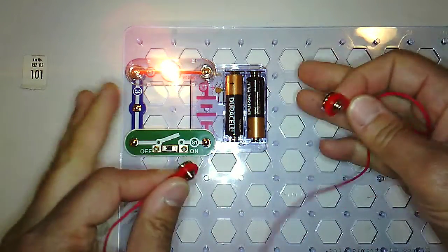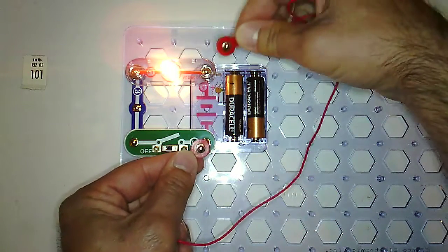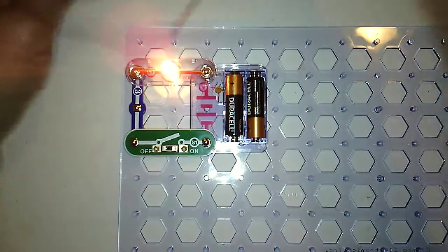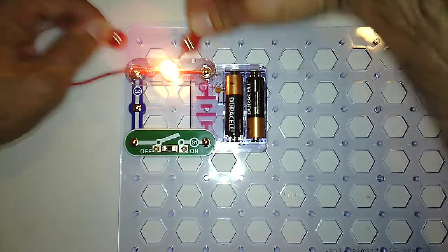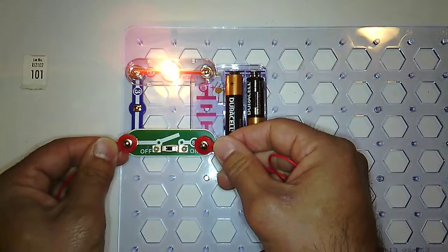There are four different locations and I'm not going to do these because I want you to make the observations on your own. Across the battery, across the bulb, across the wire, and across the switch.